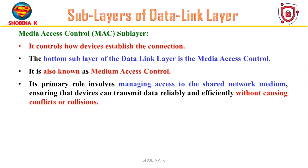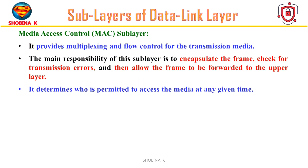Now let's understand the Media Access Control sublayer. MAC is a crucial component of the data link layer situated at the bottom of the sublayer, responsible for governing how devices establish connections and access the network medium. The MAC sublayer's main job is to ensure devices can send data smoothly over a shared network without problems or slowdowns. It handles multiplexing and flow control for transmission media, ensuring efficient data transfer. Its primary responsibilities are encapsulating the frame, checking for transmission errors, forwarding the frame to the upper layer, and regulating access to the media by deciding which devices are allowed to transmit data at a given time.